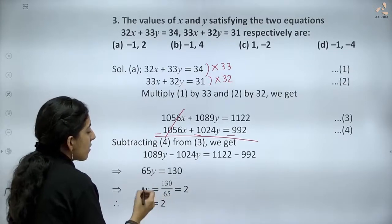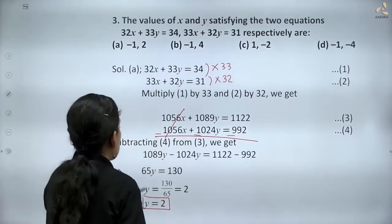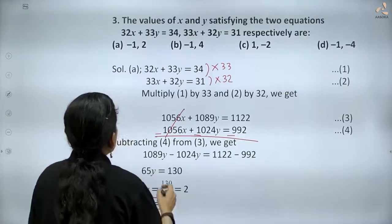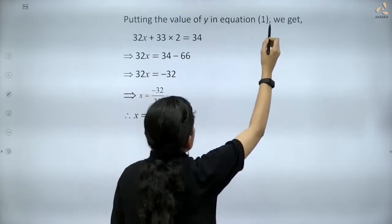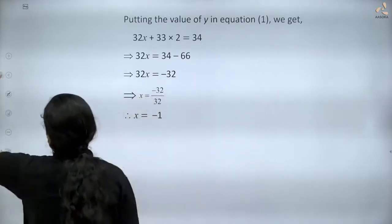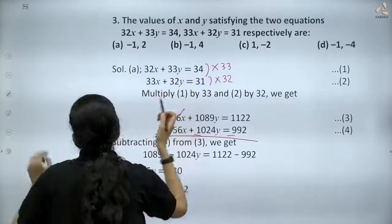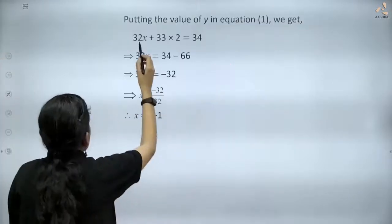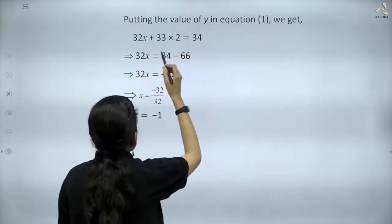Now we need to find the value of x. Putting the value of y in equation (1), we get 32x + 33×2 = 34, which simplifies to 32x = 34 - 66.